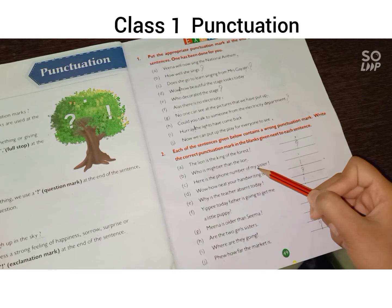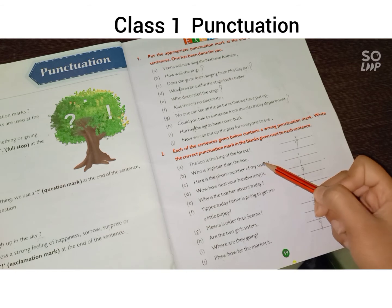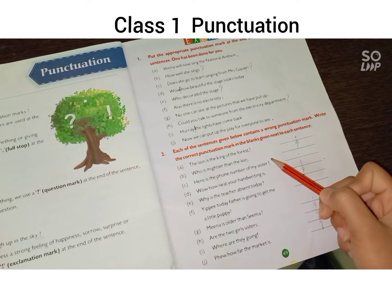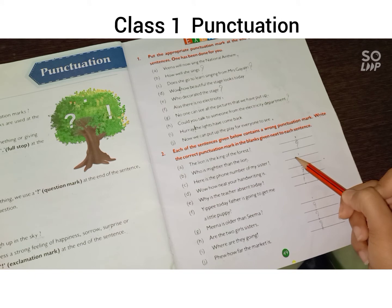Part (c): 'Here is the phone number of my sister.' यह मेरी sister का phone number है ऐसा कहा गया है sentence में, तो यहां पर last में exclamation mark लगाया गया है जो कि feeling express नहीं करता — exclamation mark हम यहां से हटा के full stop लगाएंगे।